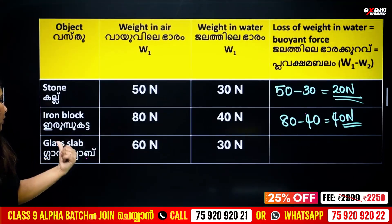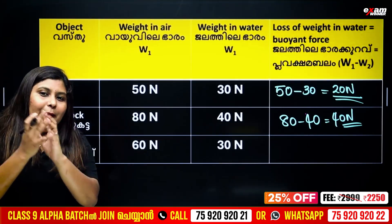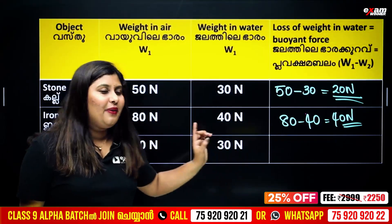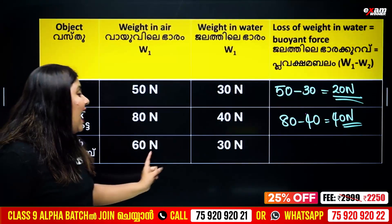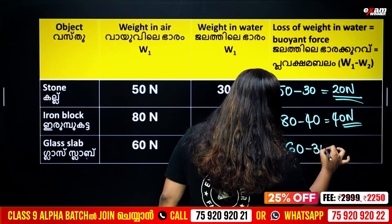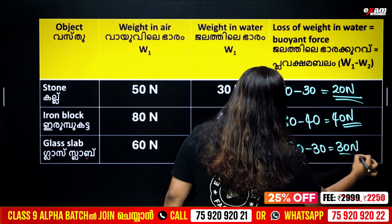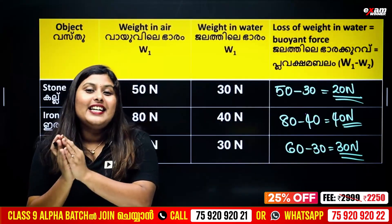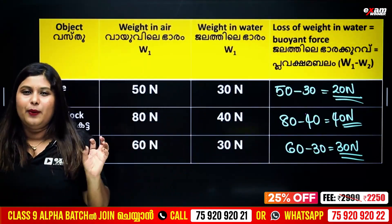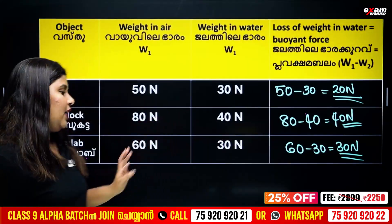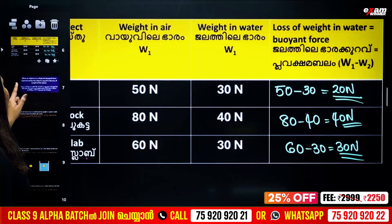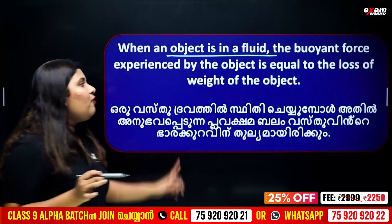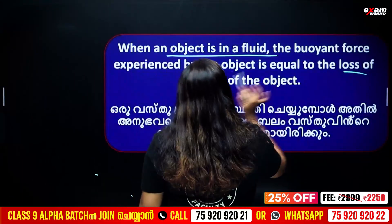The weight in air is 60 Newton and the weight in fluid is 30 Newton. You can see that 60 minus 30 is 30 Newton. If you put an object in a fluid, the buoyant force experienced is equal to the loss of weight of the object: weight in air minus weight in fluid.